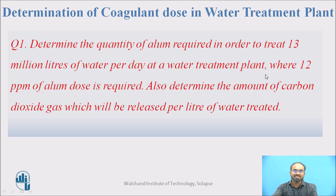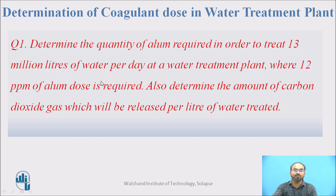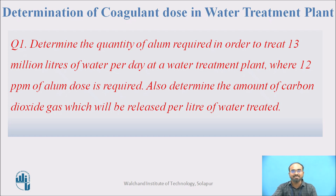Now we will see two numericals regarding the coagulant dose. The first is relatively simple. Determine the quantity of alum required to treat 13 million liters of water per day (13 MLD) at a water treatment plant where a dose of 12 PPM or 12 mg per liter of alum is required. Also determine the amount of carbon dioxide released per liter of water treated.